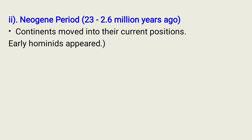The second period is the Neogene Period, from 23 million up to 2.6 million years ago. During this time, continents moved into their current positions and early hominins appeared.